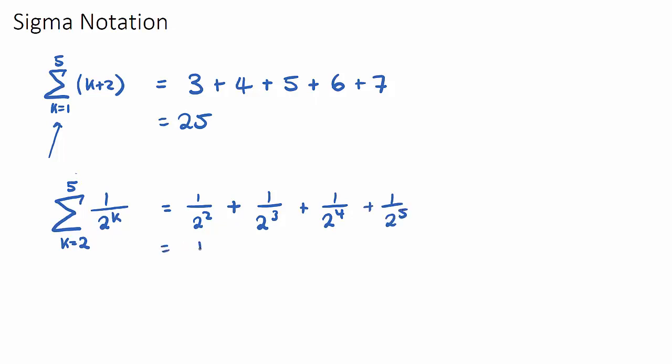Now we can work this out. This is 1 on 4 plus 1 on 8 plus 1 on 2 to the 4 is 16 plus 1 on 32. And I think you get the message here. We could all get a common denominator. I will do it.